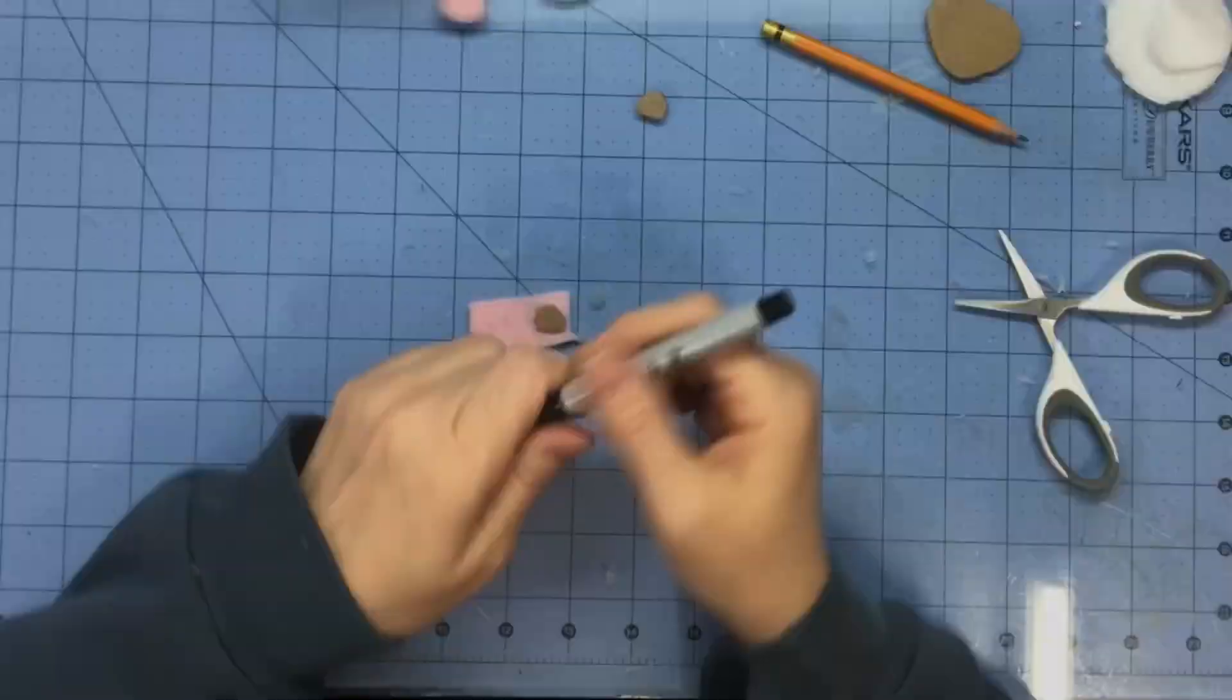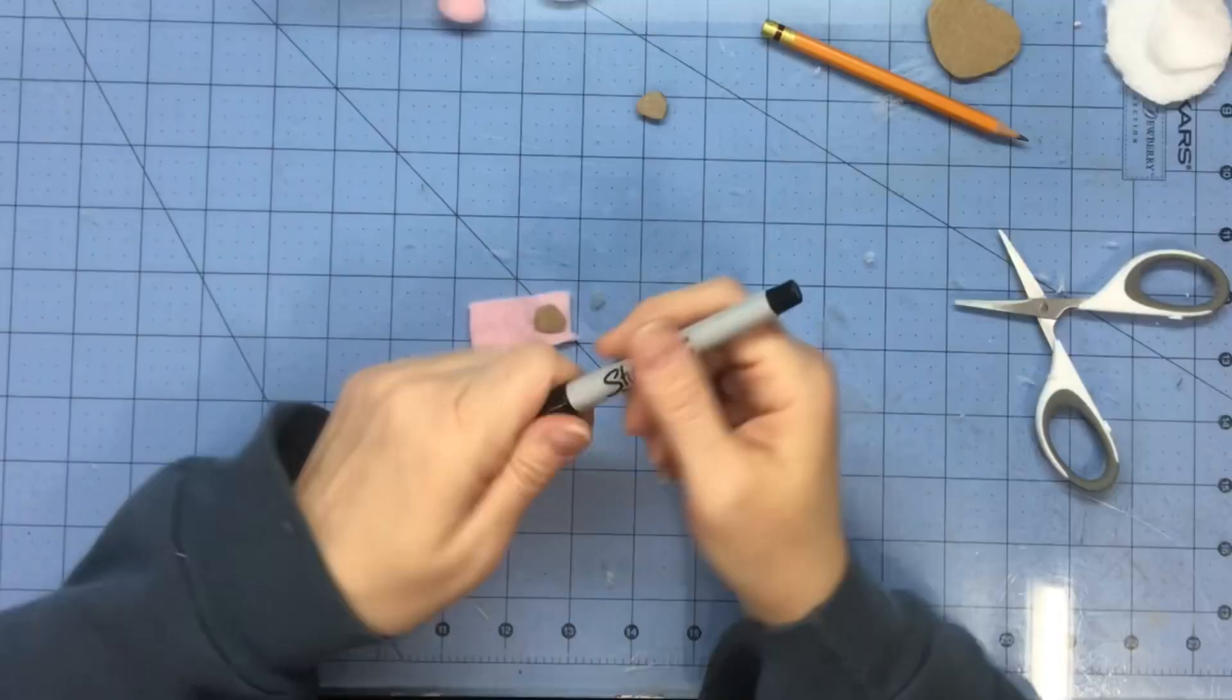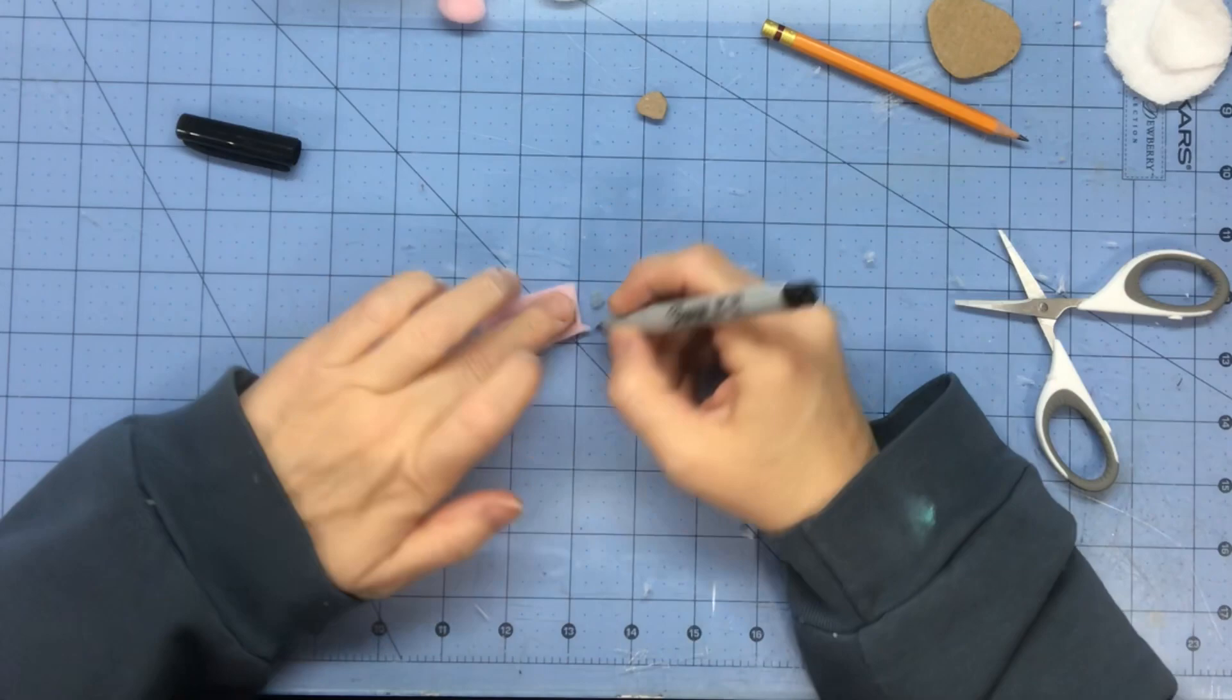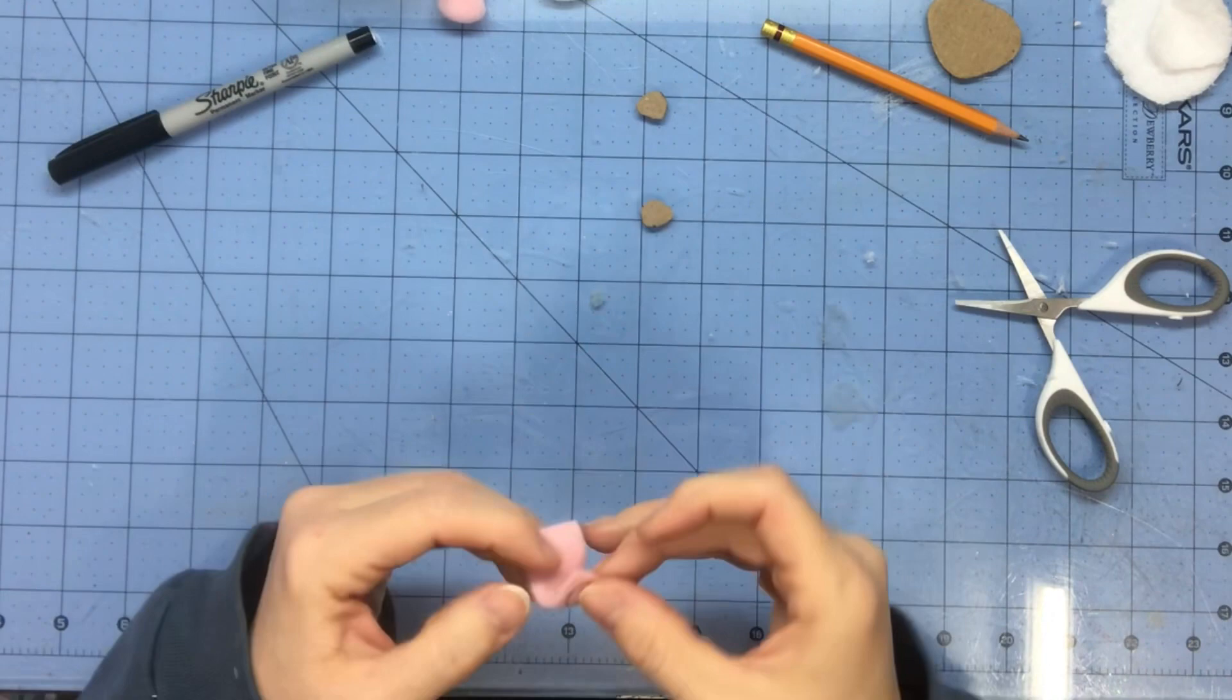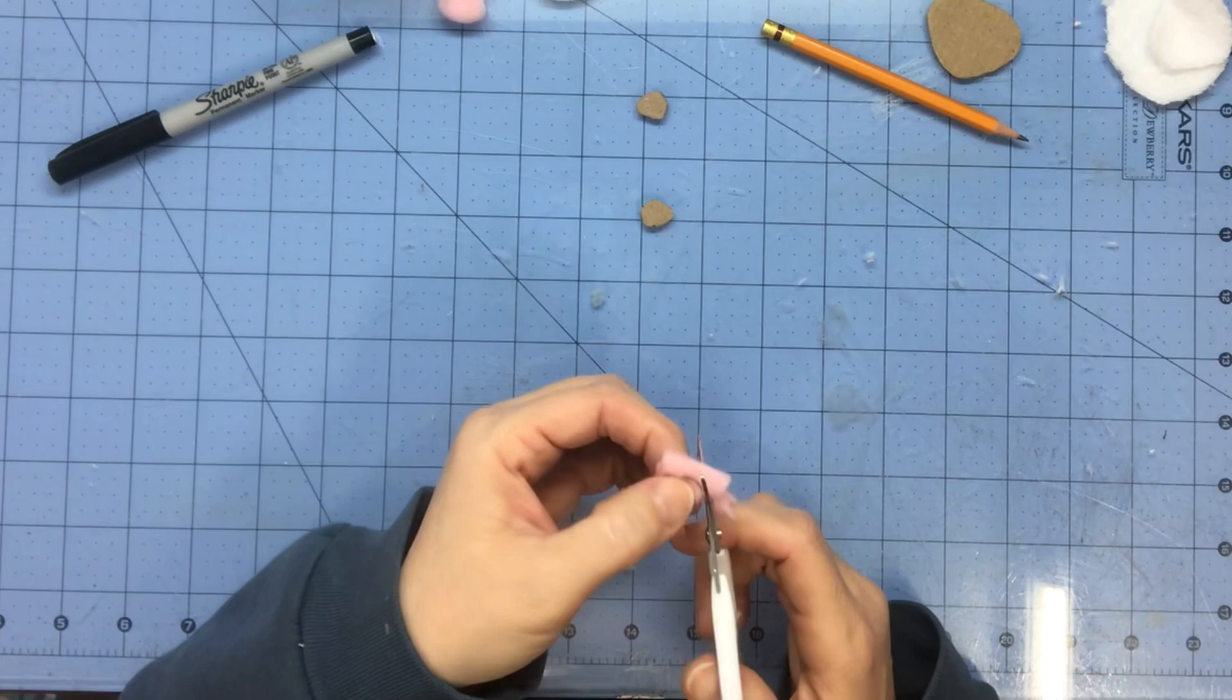For the pink part, I'm just going to take a Sharpie and trace on my felt. These are itty bitty, so just tracing will do. Then I'll fold it over and cut around that tracing mark. This is going to be my two little pink parts on my paw.